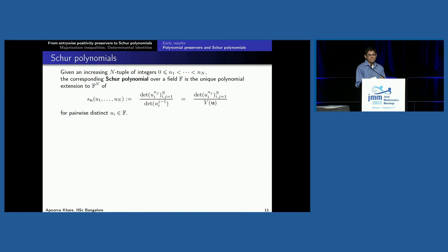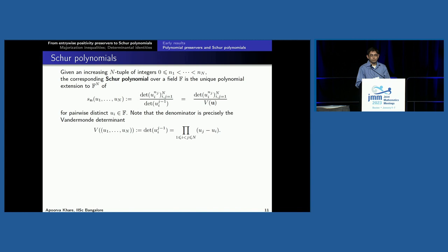Let me define Schur polynomials. There are two definitions. This one is due to Cauchy: given an increasing tuple of exponents, the corresponding Schur polynomial is — the idea is you take a generalized Vandermonde matrix U_i^{n_j}. The determinant is a polynomial in the U_i's, and it is alternating. Because it's alternating, it is divisible by the Vandermonde determinant in the U's. So you divide and you get an honest polynomial called the Schur polynomial.